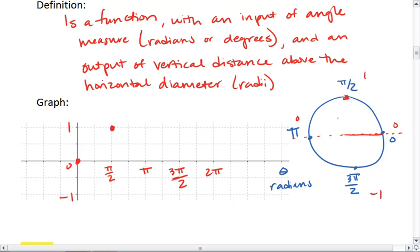Then, when we're in the far left position, we're on a horizontal diameter, so we're 0 radius lengths up or down.